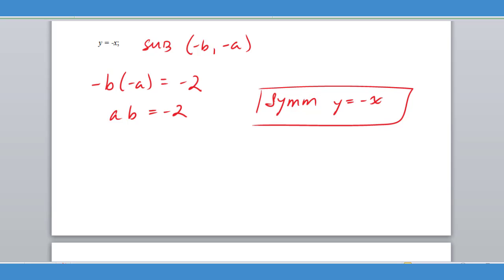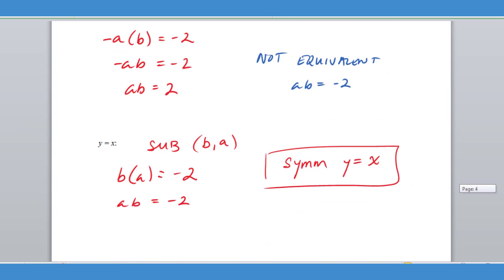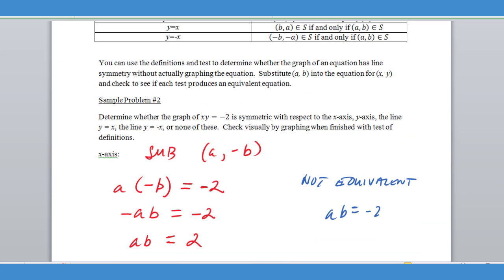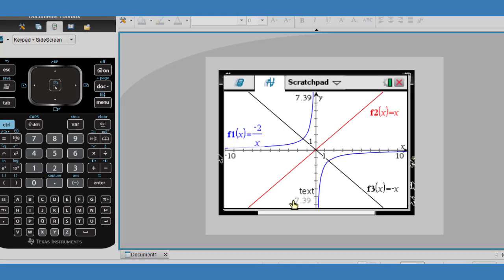The way we can quickly tell that, if we go back up here, it says to check visually by graphing when finished with the test. If I wanted to graph this, I would have to convert my equation to something that is graphable. So I have to have Y equals, so I'm going to say negative two over X.